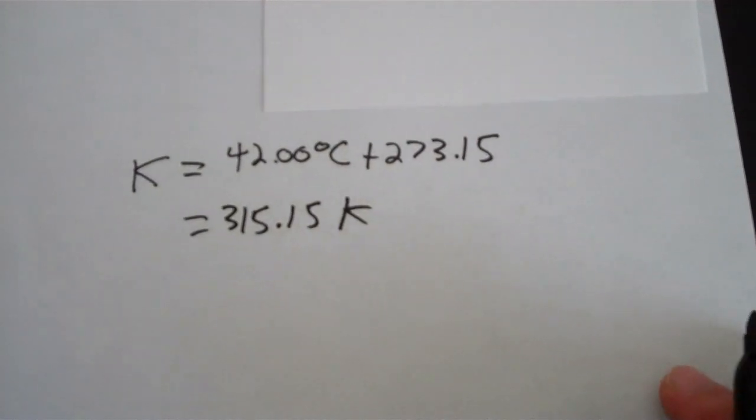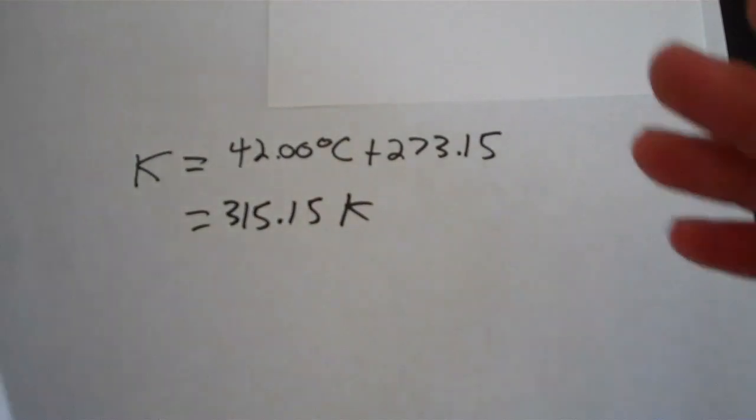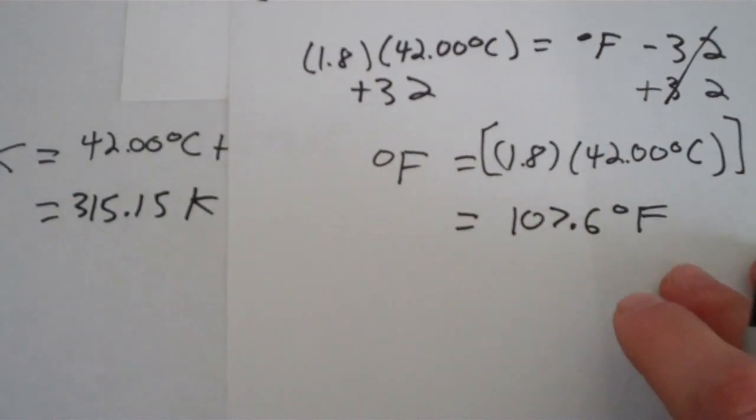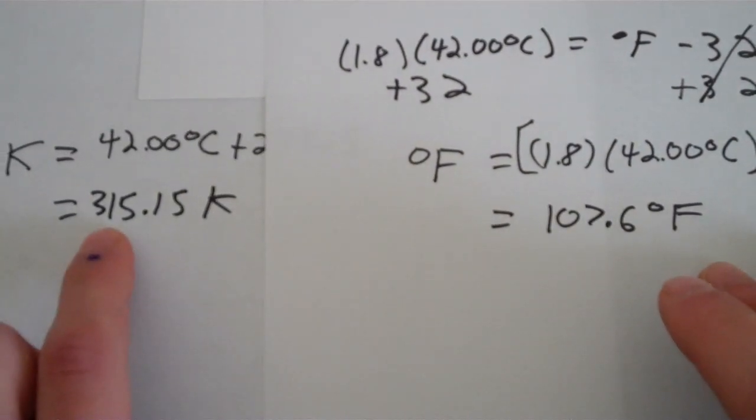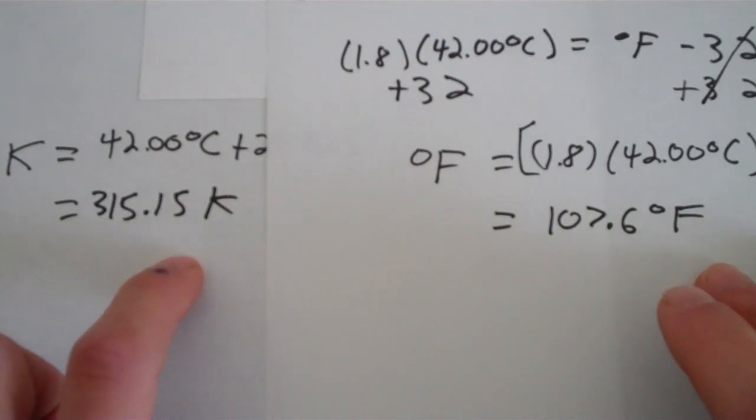So that means that 42.00 degrees Celsius is 107.6 degrees Fahrenheit and 315.15 Kelvin. And that's how you do it.